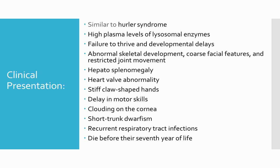Affected children often have stiff claw-shaped hands and fail to grow and develop in the first months of life. Delays in motor skills are usually more pronounced than delays in cognitive skills. Children with mucolipidosis type 2 eventually develop corneal clouding and short-trunk dwarfism. They are often plagued by recurrent respiratory tract infections including pneumonia, otitis media, and bronchitis, and there is also an increased risk of carpal tunnel syndrome. Children with mucolipidosis type 2 generally die before their 7th year of life, often as a result of congestive heart failure or recurrent respiratory tract infections.